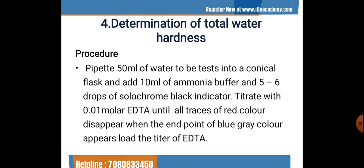The next test is the determination of total water hardness. Water hardening compounds are generally the presence of magnesium or calcium — if present in larger quantities, they make water hard. We pipette 50 ml of water to be tested into a conical flask, add 10 ml of ammonia buffer and 5–6 drops of solochrome black indicator. The known solution used for titration is 0.01 molar EDTA, added until all traces of red color disappear and a blue-gray color appears.